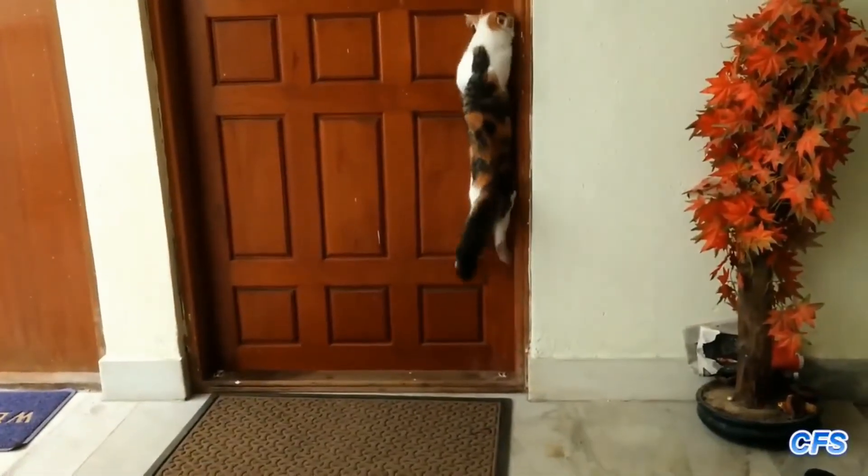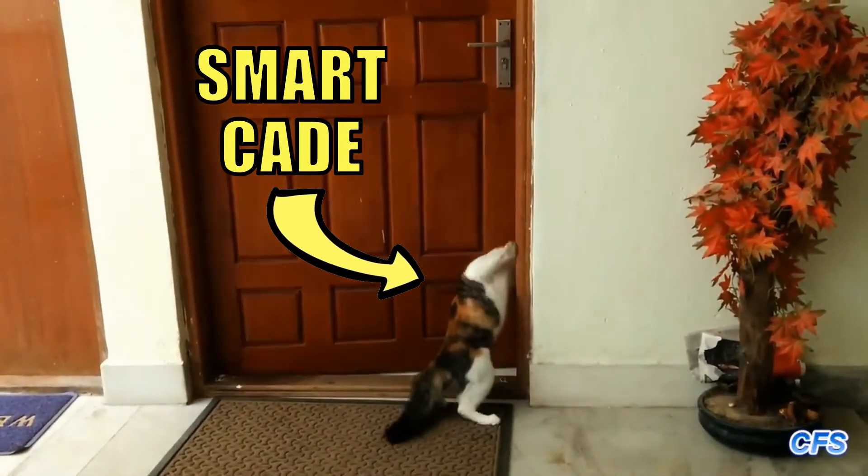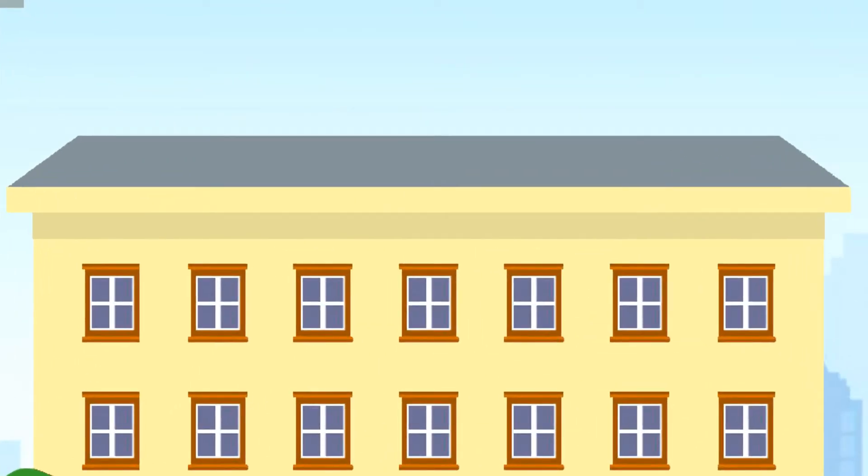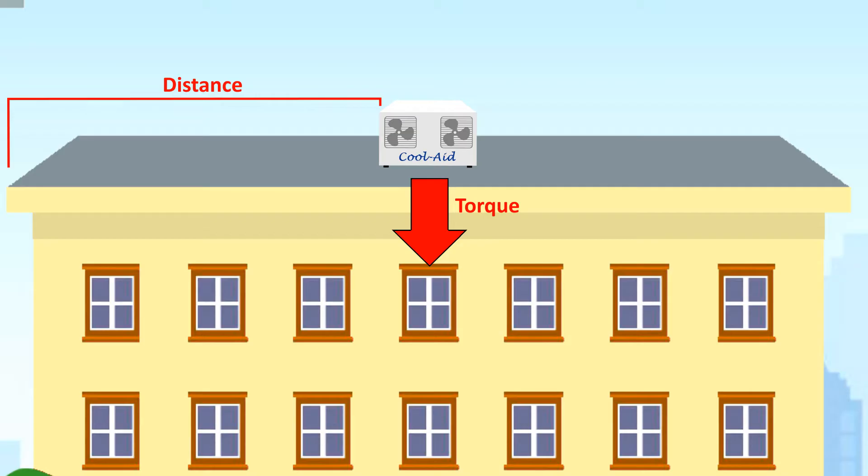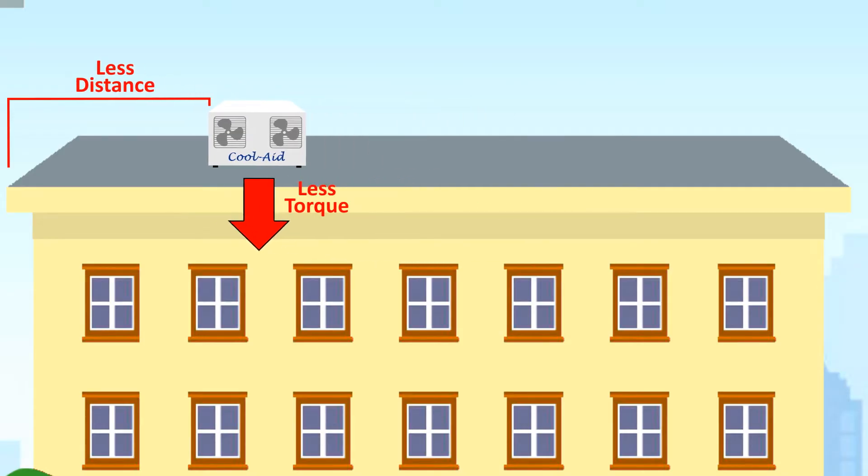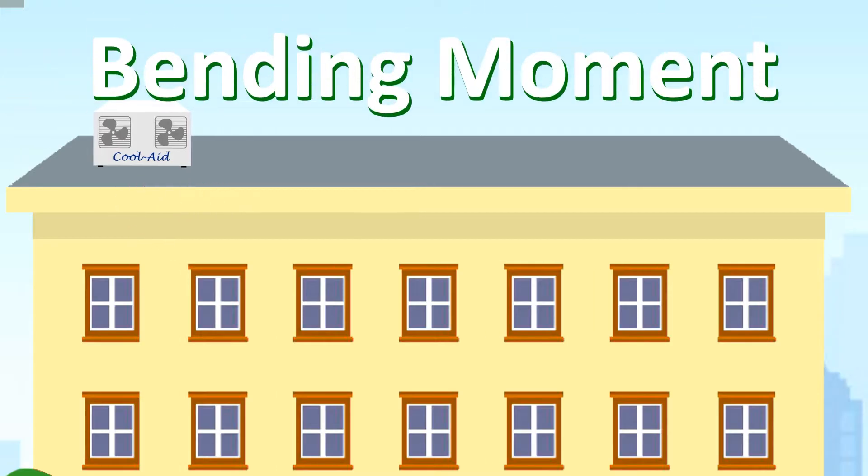That's why door handles are stuck far away from the hinge. You get more leverage that way. Using the same logic, if you have to keep a heavy load on the rooftop of a building, like some construction material or an air conditioning unit, it's better for the floor if you keep the load closer to the wall so there is less twisting force or as they call it in structural engineering, bending moment.